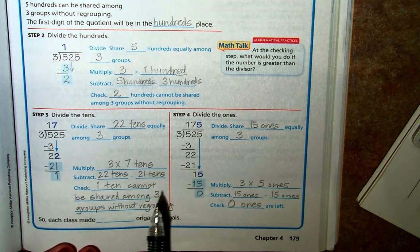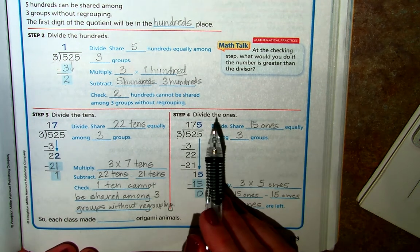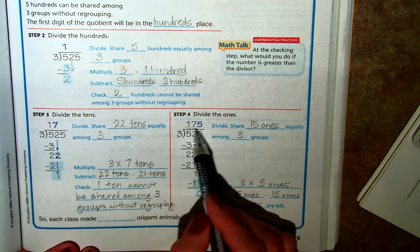So a quotient all the way to the ones place. And so our answer, our quotient is 175.